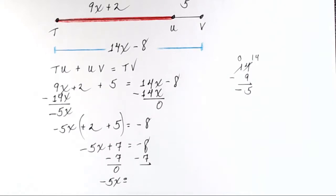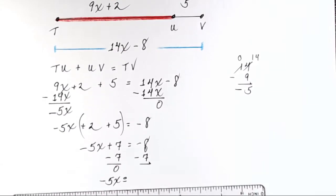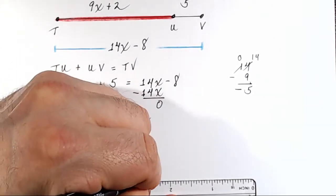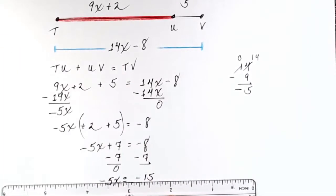I have negative 8 minus 7. Okay, well, what is negative 8 minus 7? You've got two negatives. You're going to come out with a bigger negative number. So negative 8 minus 7 is negative 15.